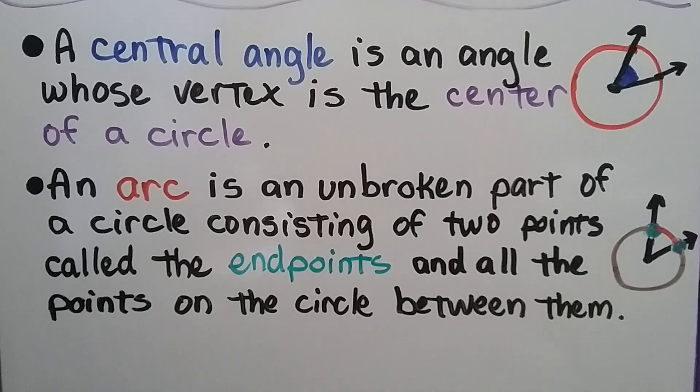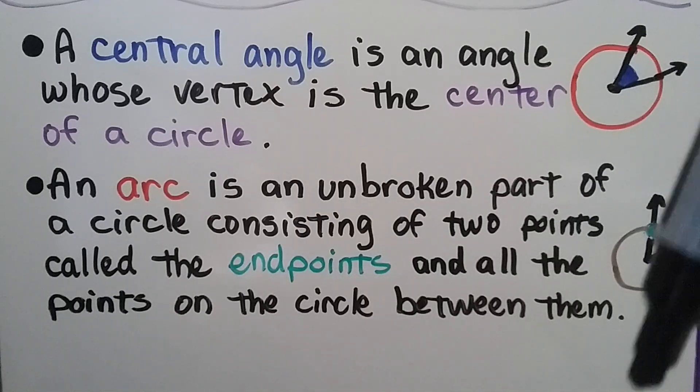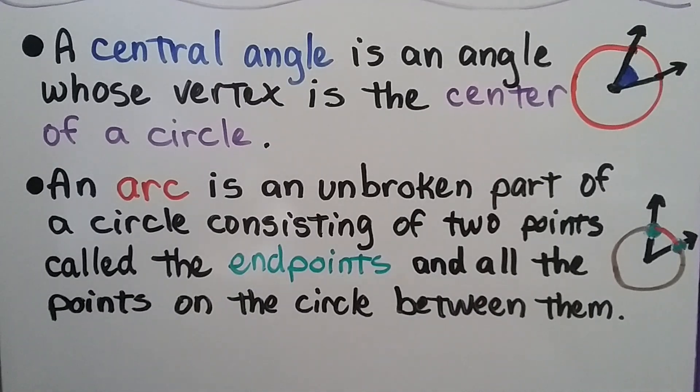An arc is an unbroken part of a circle consisting of two points called the endpoints. You can see my green dots here. Can you see them? Right here and right here. And all the points on the circle between them. So that red area is an arc.